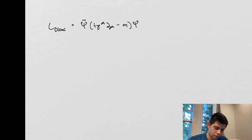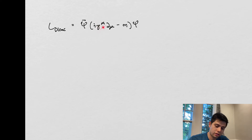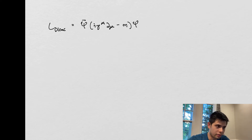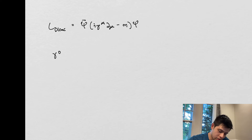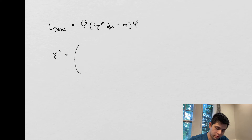There's one other important object in the Dirac Lagrangian that we need to look at: these are called the Dirac matrices. There are four of them, and they arise when we begin to consider the concept of spin in particles. They are four-by-four matrices.